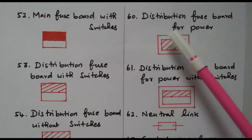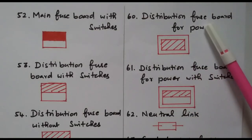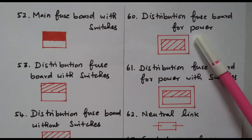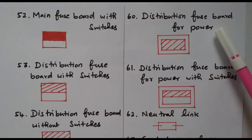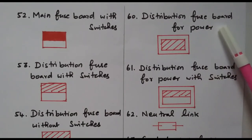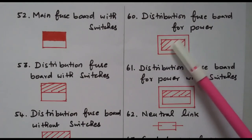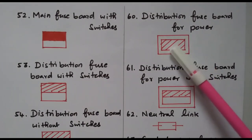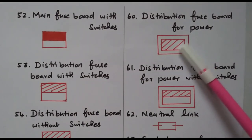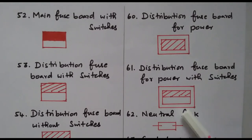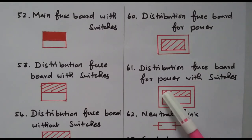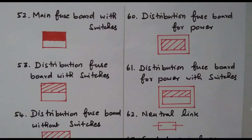Then the distribution phase board for power without switches uses two boxes with dashed lines, fully shaded. If switches are available, it is partly shaded — half of the portion is shaded.